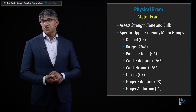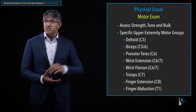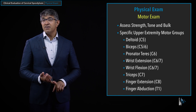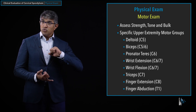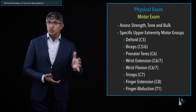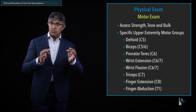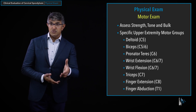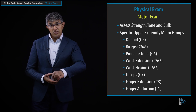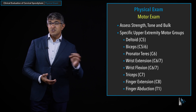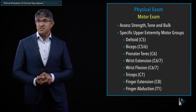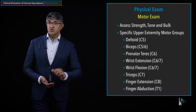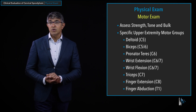The deltoid exam is the first thing I do — that's to evaluate for C5 function. I will do a bicep exam, which is typically C5 and C6. I also do pronator teres, which is more sensitive for C6. When you're not sure if it's C5, C6, or C7, I find the pronator teres exam very useful — holding someone's hand like you're shaking it and twisting outwards. Pronation tends to be predominantly C6. I also look at wrist extension, which is classically C6 with some C7 contribution from the radial nerve.